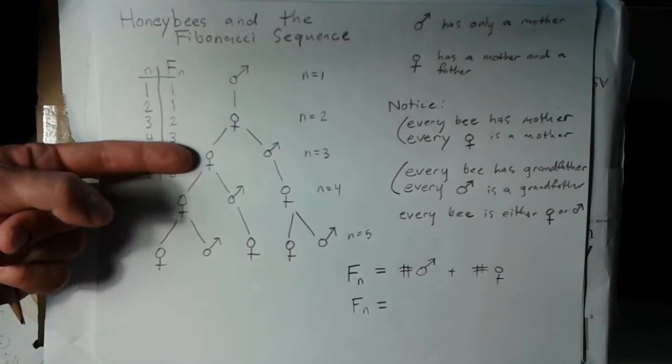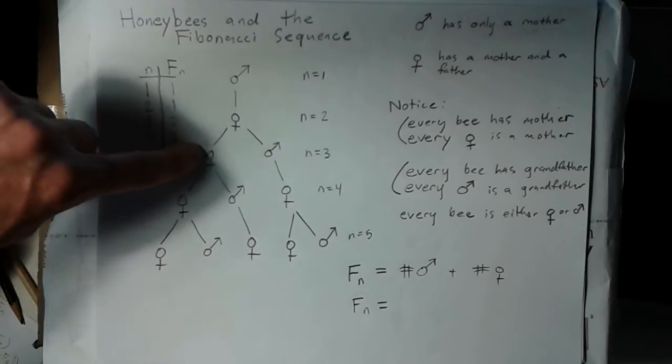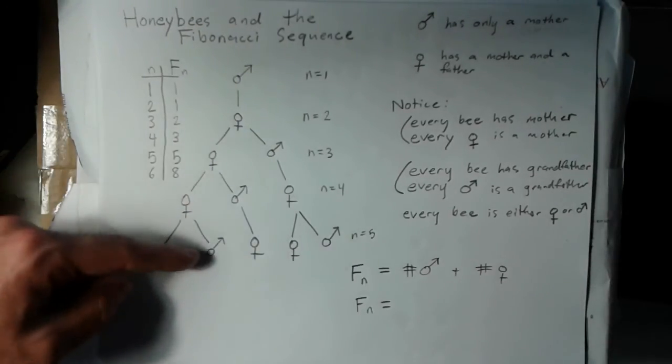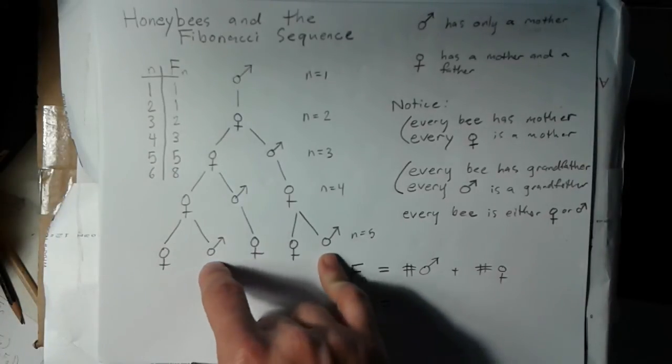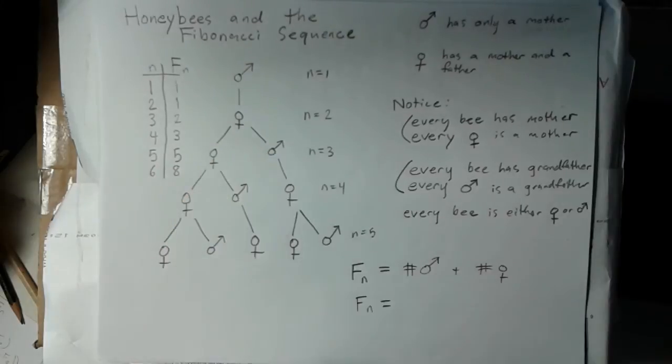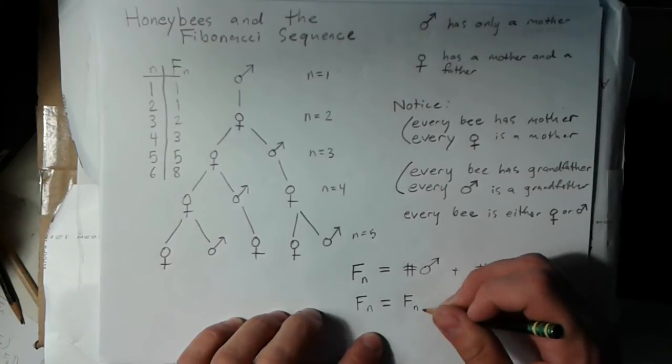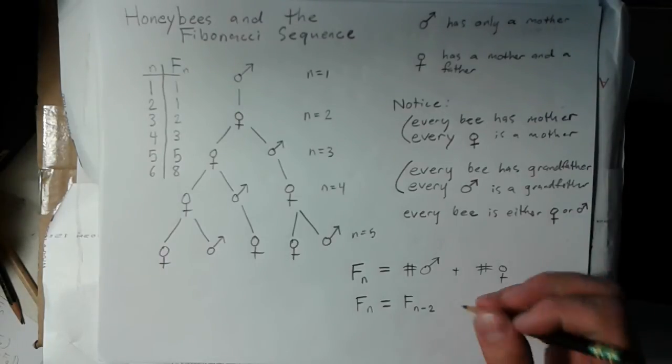We also have that every bee has a grandfather, so every bee in this generation has a grandfather that's in this generation. You have a one-to-one correspondence between the number of males in this generation and the number of bees in this generation. So the number of males in the nth generation is equal to the number of bees two generations prior.